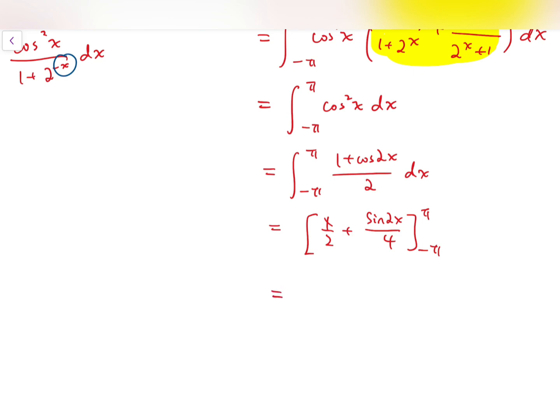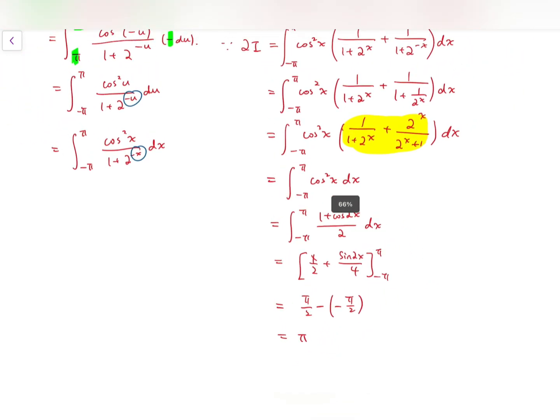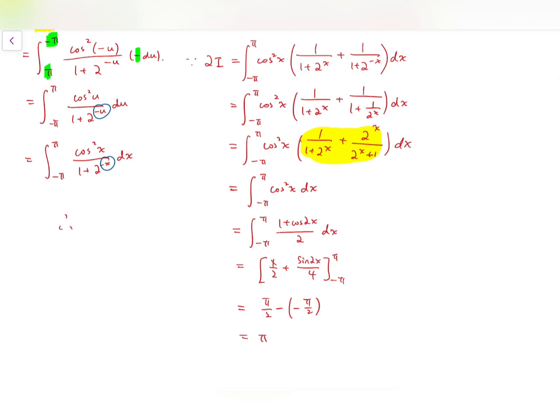And because no matter we put pi or minus pi into the sin term, it will still get zero. So evaluating, we will have pi over 2 minus minus pi over 2, which is pi. And this is actually equal to 2I, double of the integral. So we've come to a conclusion that our original integral equals pi over 2. So this is the answer.